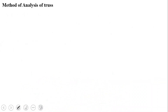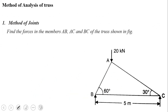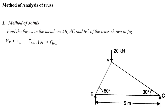Now let us take a simple problem using the method of joints. Find the forces in members AB, AC, and BC of the truss shown in the figure. We have to calculate reactions RB and RC, then determine the member forces FAB, FAC, and FBC.